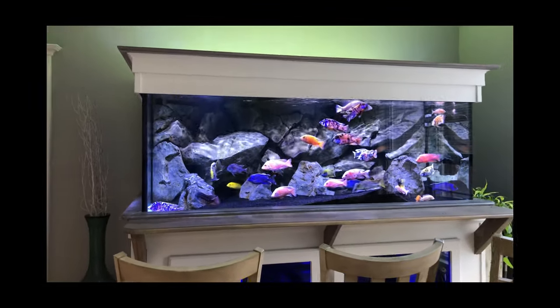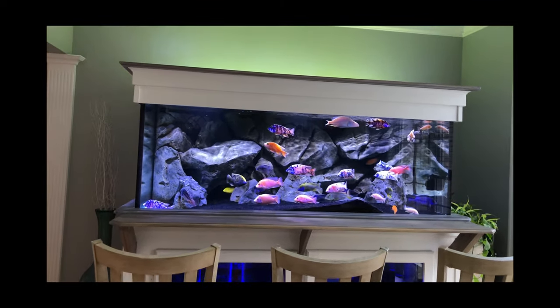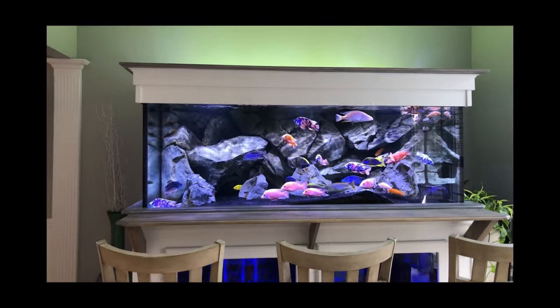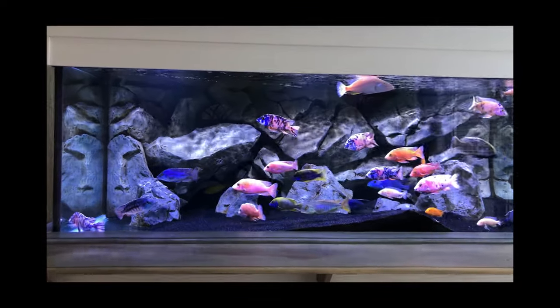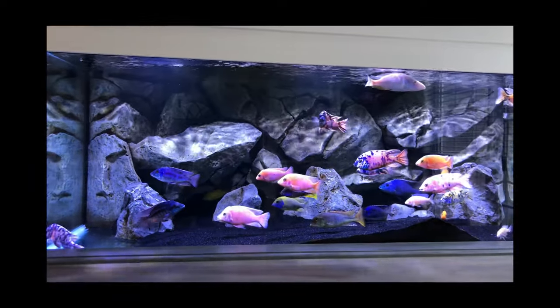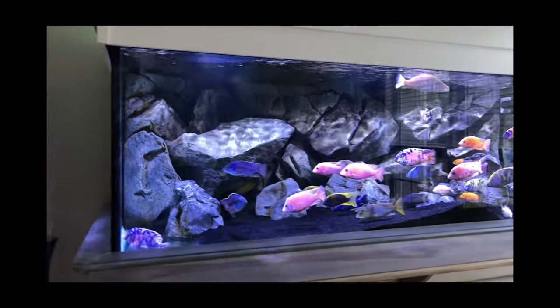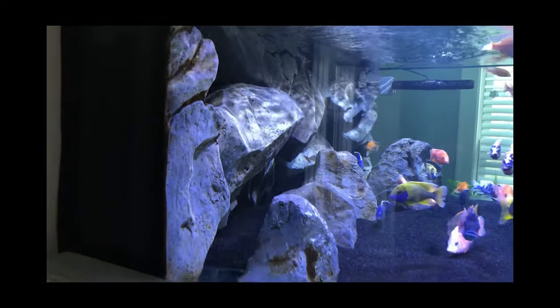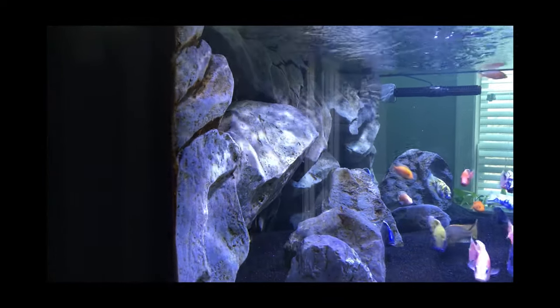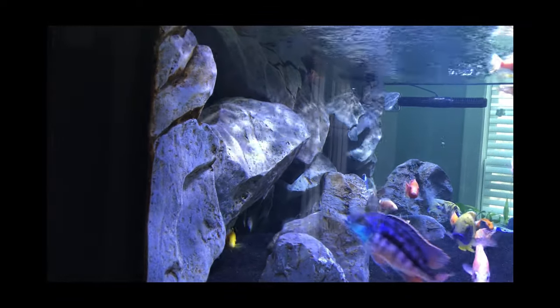To start off, this is a 300 gallon Marineland 300 deep dimension tank. The footprint on this tank is 6 feet wide and 3 feet front to back. I do have an Aqua Decor massive rocks background on this tank, so it does chew up a bit of space.